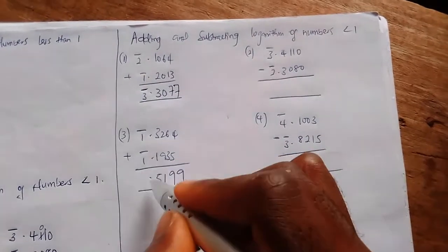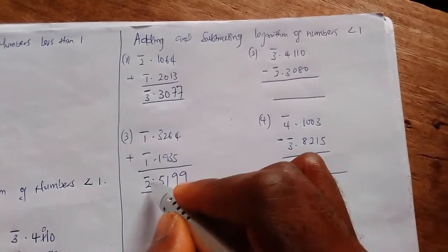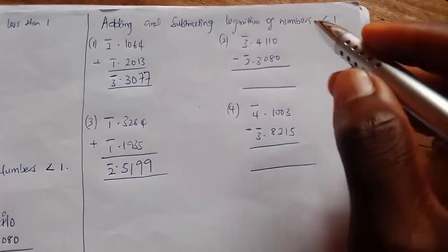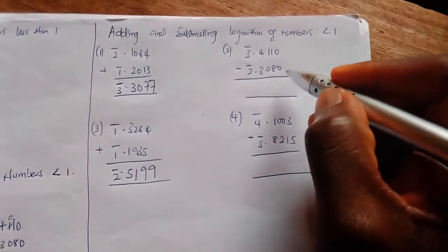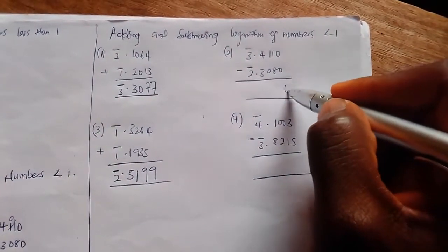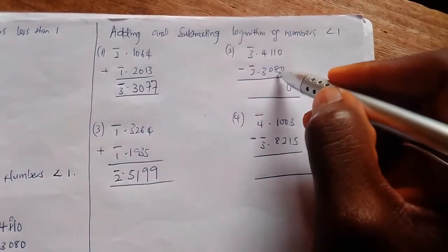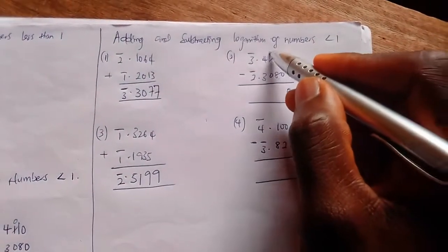Now for the case of subtraction, let's see. Zero minus zero gives us zero. One cannot subtract it, so I borrowed one from one, it remains zero. This becomes eleven. Eleven minus eight gives us three.